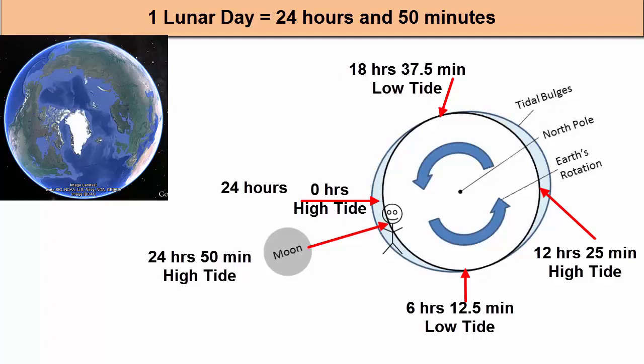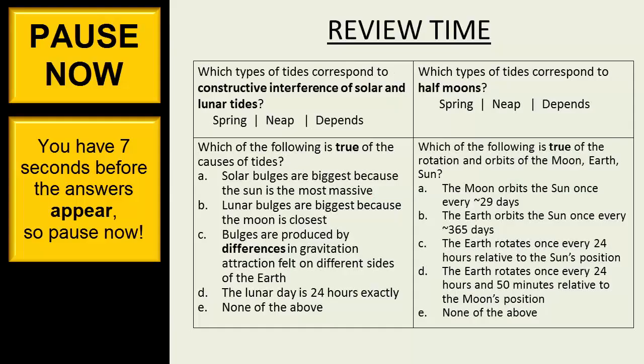And that's why we experience two high tides and two low tides every 24 hours and 50 minutes. Or, more precisely, the period of one wave is 12 hours and 25 minutes. Pause now.